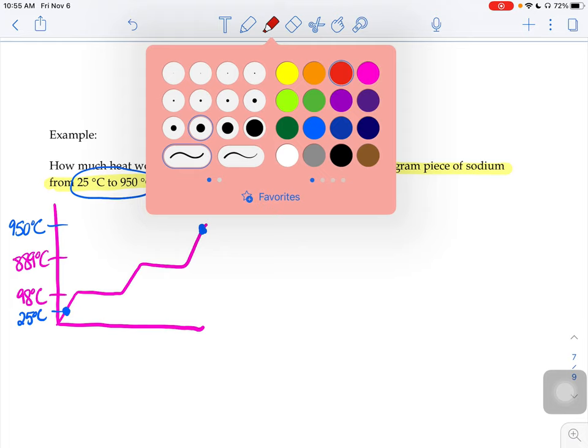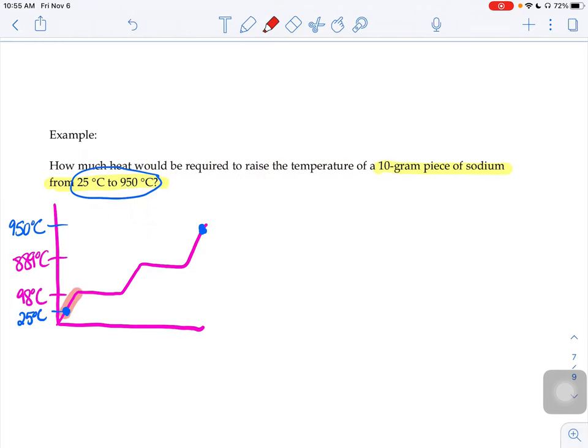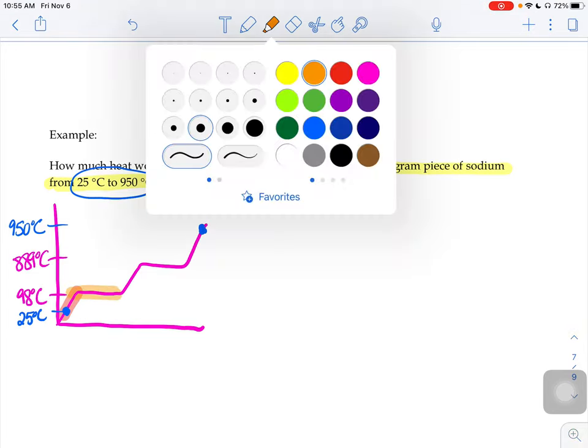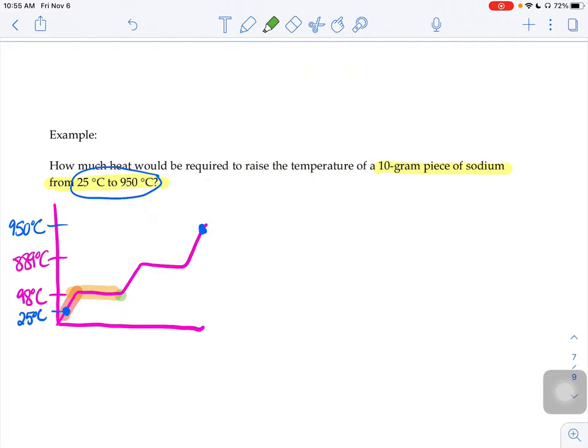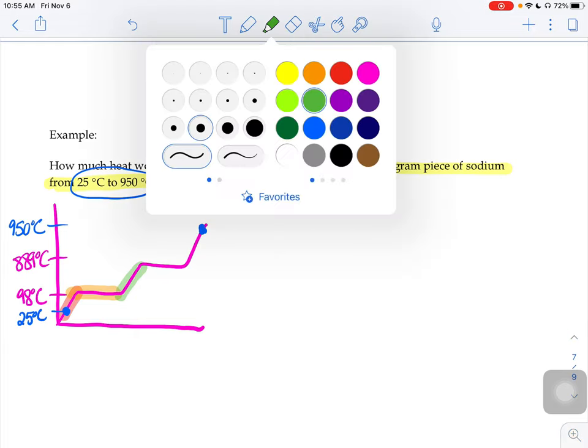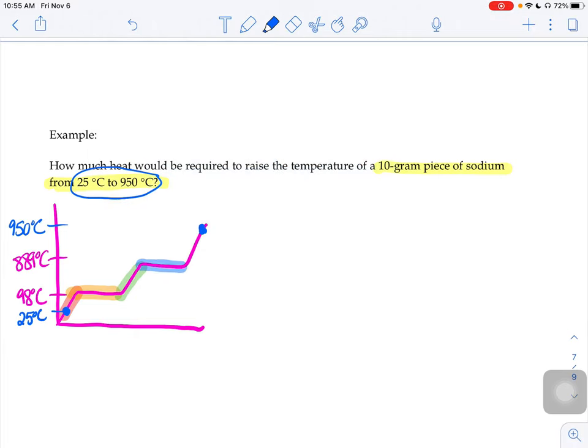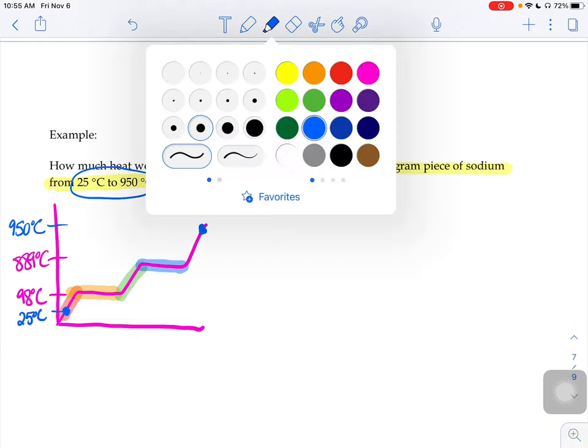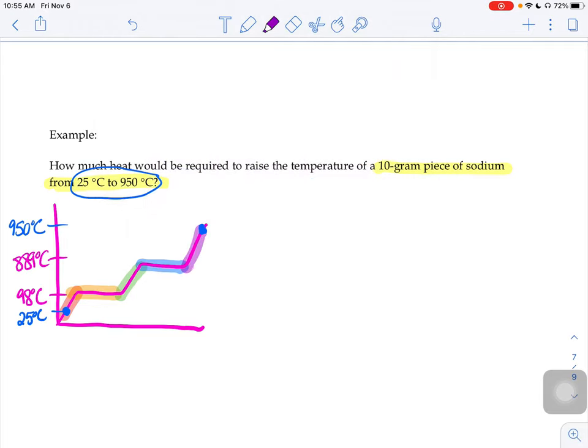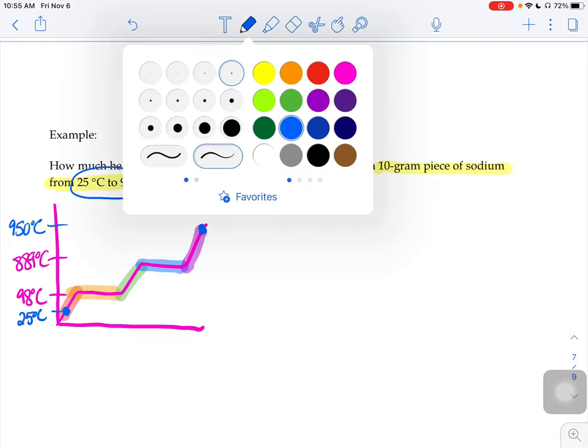So this is going to be a five-step problem. The first step is going to be warming up my solid. Then I'm going to have to melt my solid. Next, I would have to warm up my liquid. I would then have to boil my liquid. And then last step, I'd have to warm up the gas. So let's break this down step by step.